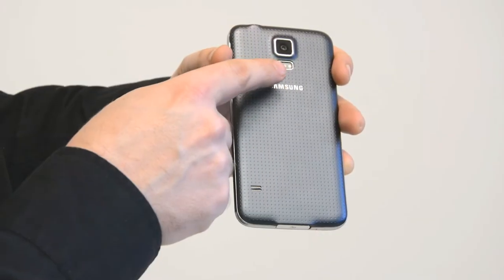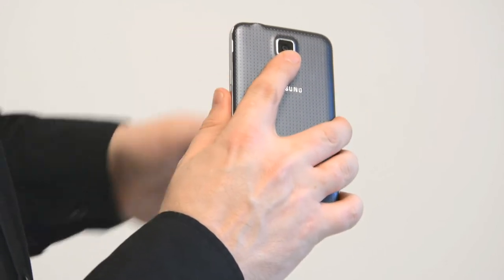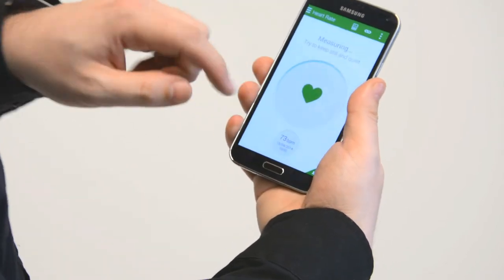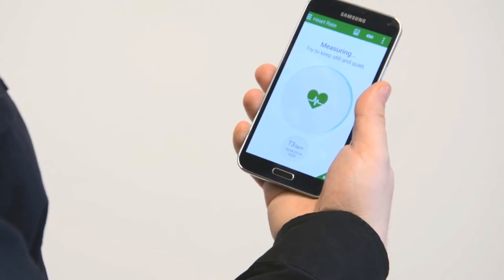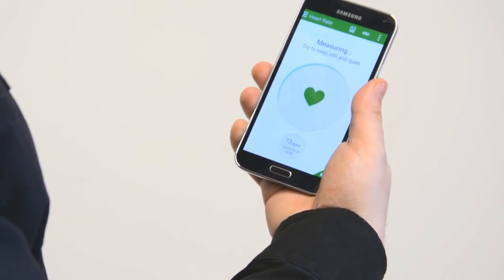At the back of the phone you might also notice a new sensor tucked away next to the flash. This is a heart rate monitor which works with Samsung's S Health app. If you invest in one of Samsung's new Gear 2 smartwatches the S5 can communicate with the various fitness apps that run on that.